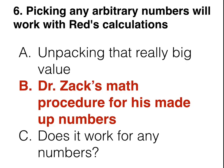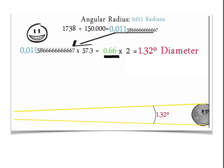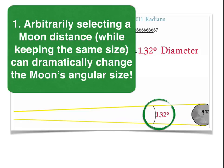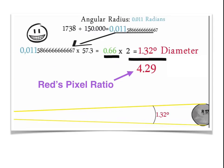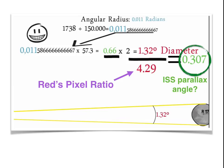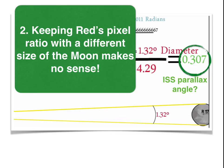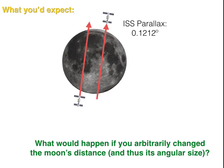Let's go through your procedure using your made-up numbers. One thing you do is arbitrarily change the distance to the moon while keeping the moon the same size and diameter, which dramatically changes the moon's angular size in our sky. 1.32 degrees — that's almost three times as big as the moon appears in our sky; somebody would notice. You can't just arbitrarily change the distance to the moon. Furthermore, you're using Red's pixel ratio of 4.29, which was based on an actual measured photograph. You can't take some random size of the moon and divide it by Red's pixel ratio — that simply doesn't make any sense.